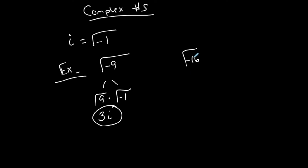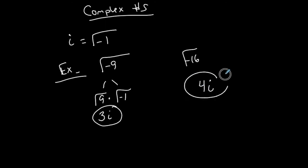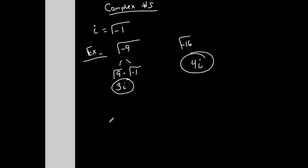Let's do a quick one: what is the square root of negative 16? Here's what you can do to make it fast — that negative under the square root is going to come out and become an i. The square root of 16 is 4, so the square root of negative 16 is 4i.